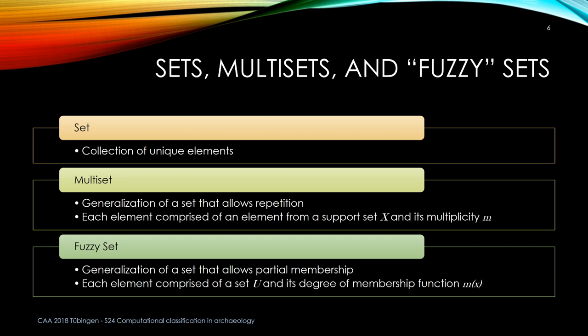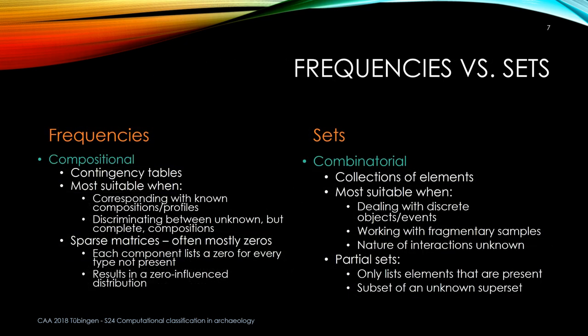There are plenty of both R and Python packages that deal with this quite handily. So again, frequencies versus sets: we're used to dealing with frequencies — contingency tables, lists of numbers — which is well and good when dealing with entire assemblages, when looking for a diagnostic profile with the full assemblage. But if we're not dealing with a partial, if we know the total assemblage, then and only then can we deal with compositional statistics.